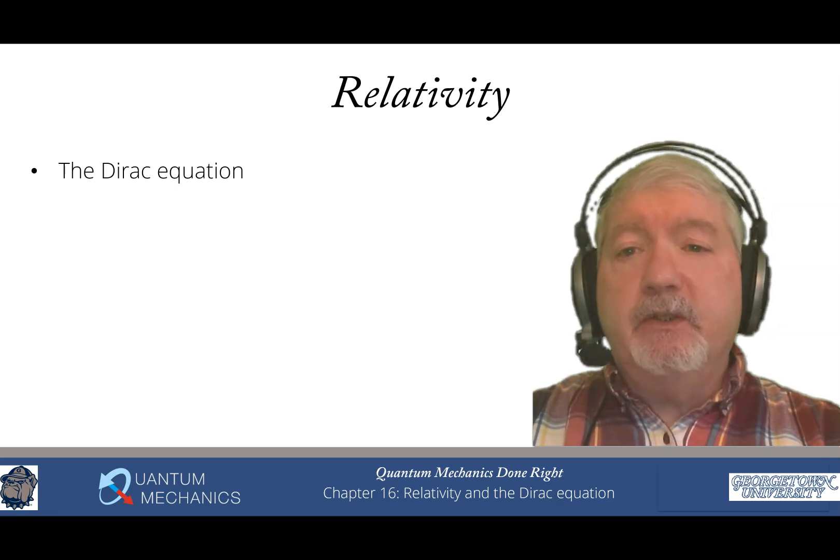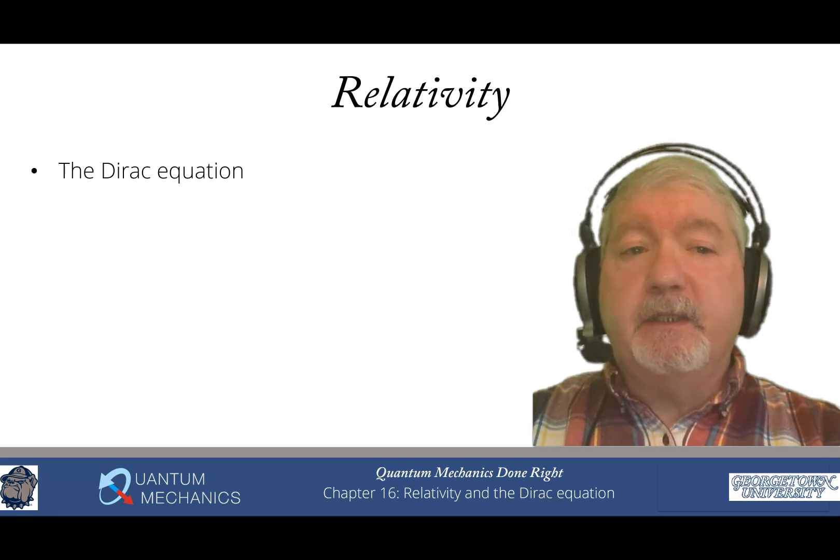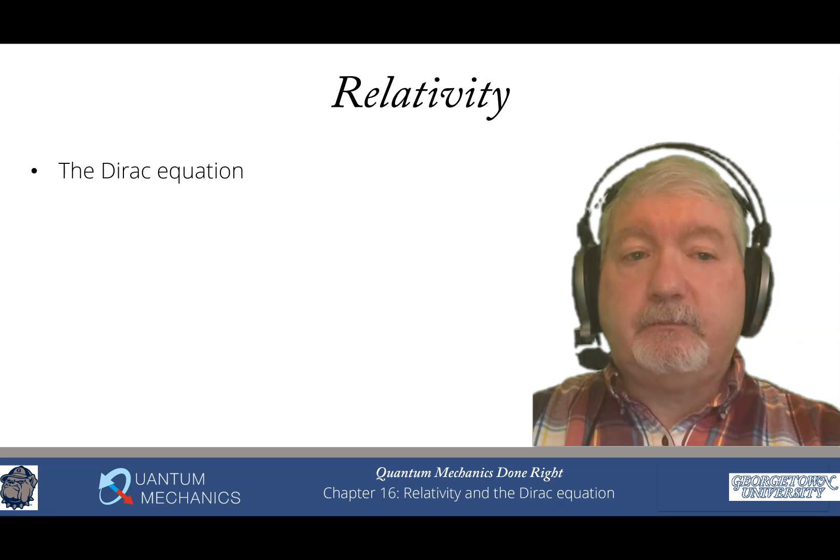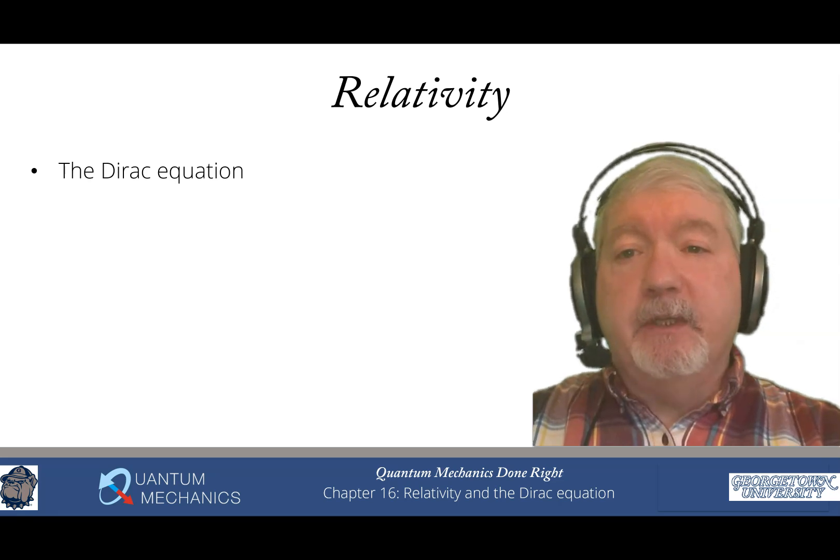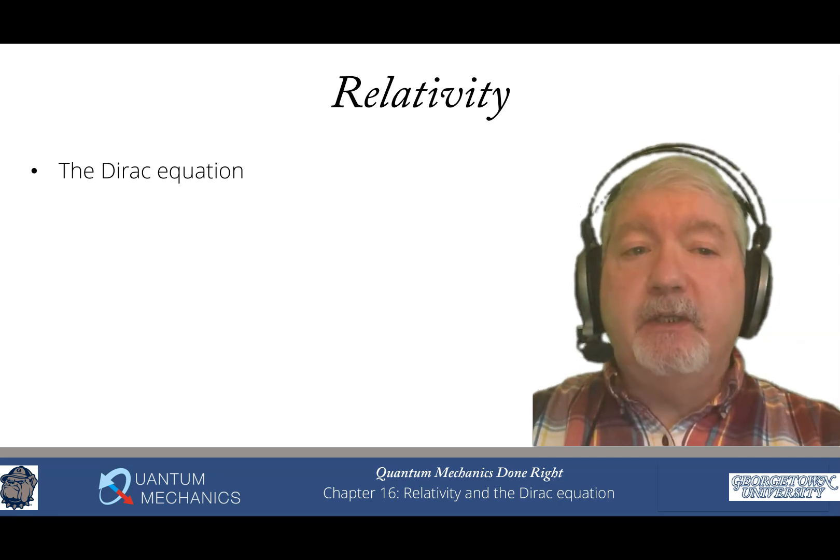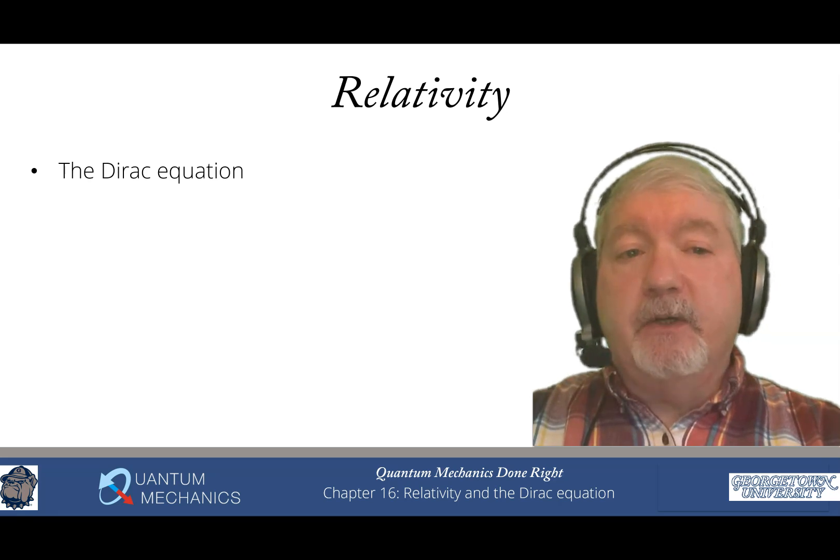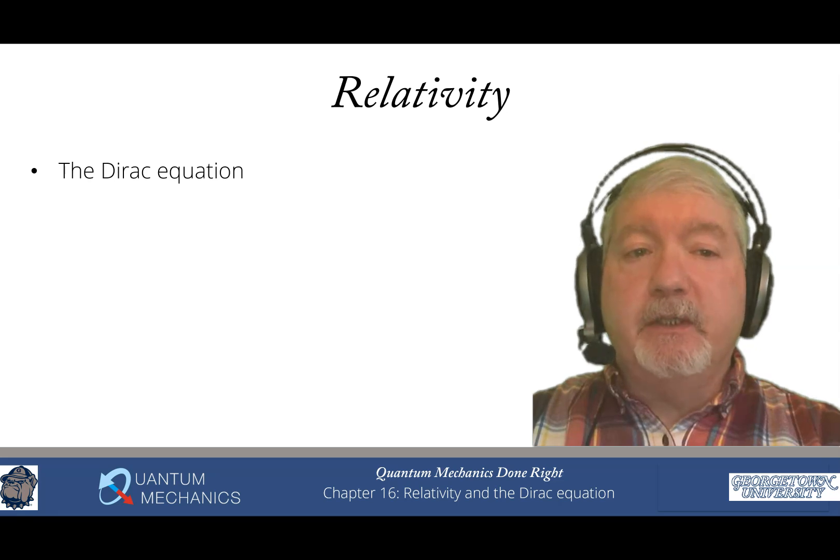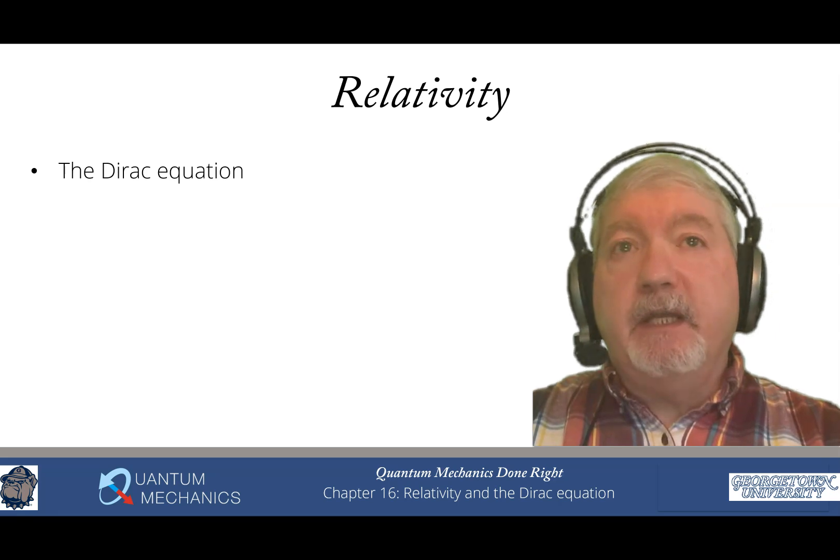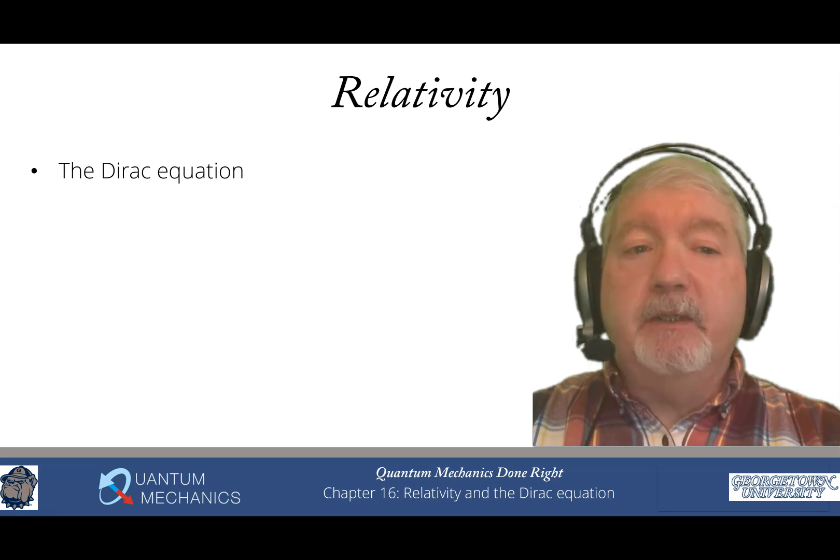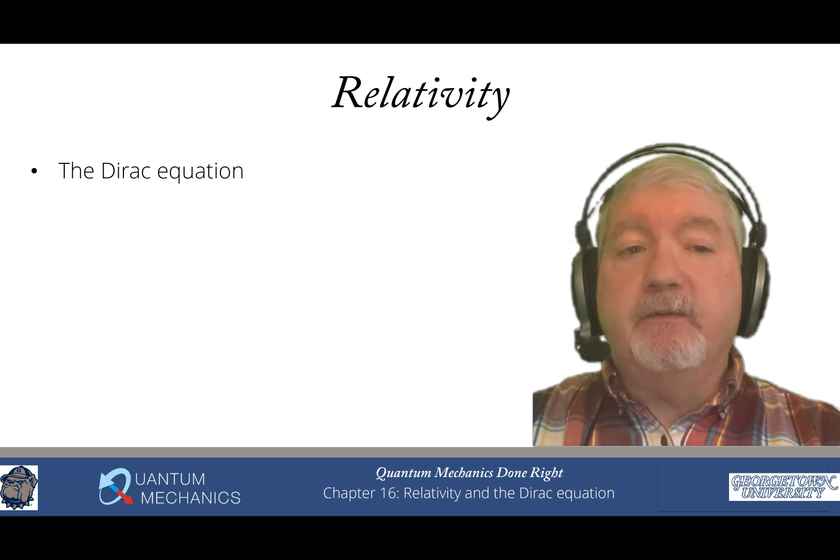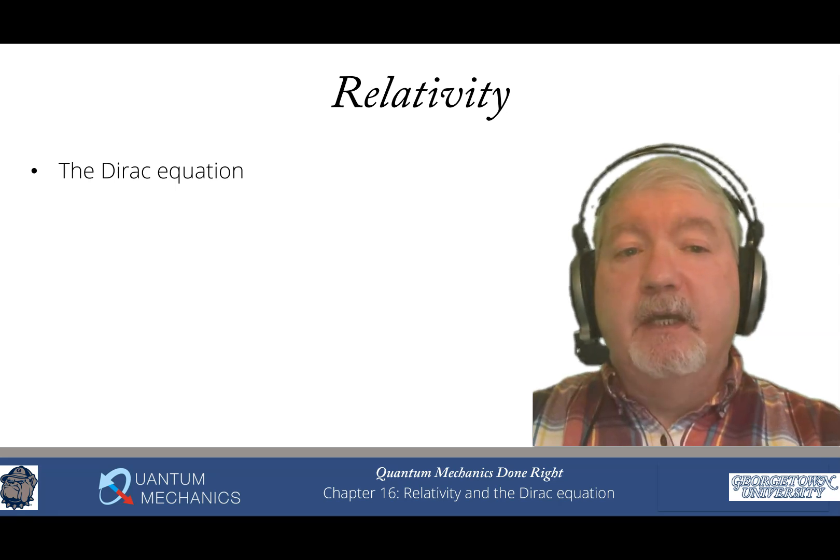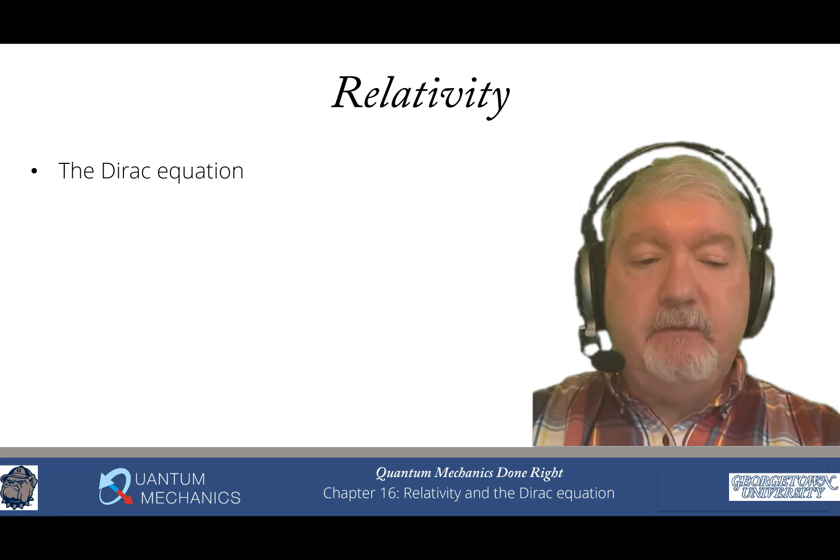We essentially use a little bit of relativity, the fact that e squared equals p squared c squared plus m squared c to the fourth. That's the guiding principle we use to find the Dirac equation. As Dirac did, we require the Dirac equation to be linear so it has superposition and all the kinds of behavior that quantum mechanics has. You can expand it in the limit where relativistic effects are small, and find it does have the non-relativistic Schrodinger equation buried inside.